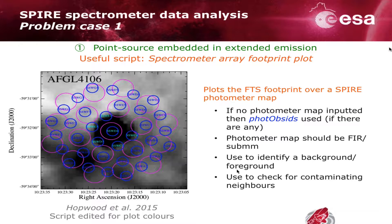The first thing to do is inspect the off-axis detectors — that's the first and second ring, and the SSW third ring shown in the plot on the left. This plot was created using the spectrometer array footprint useful script in HIPE, although the plot colors were edited. If no photometer map is inputted, the script looks in the metadata for photometer obs IDs with overlapping observations. If you are inputting your own photometer map, you should use one taken in the far-red or submillimeter; otherwise you won't see appropriate emission to compare to the spectrometer. You can use this comparison to identify extended background, foreground, or contamination by neighboring sources.